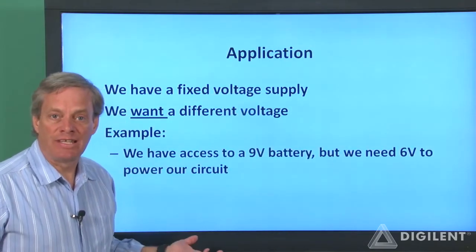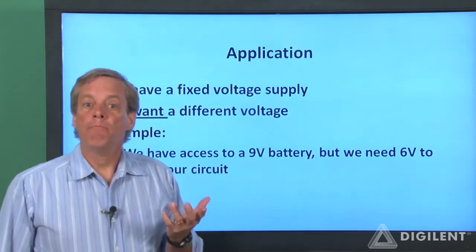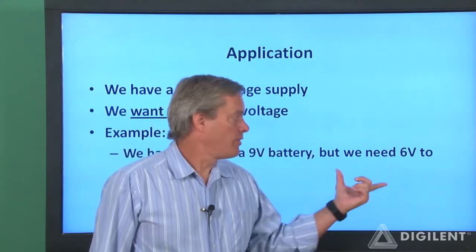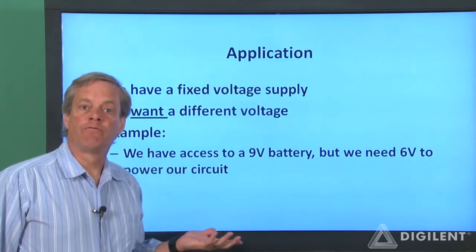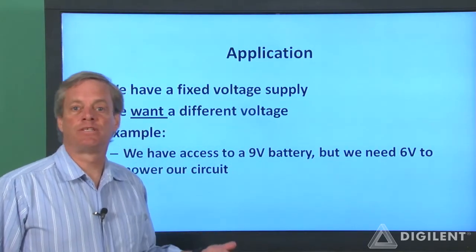As a specific example, suppose we have a 9-volt battery, but the circuit that we're designing requires 6 volts to work. We have to somehow convert our available 9 volts to the 6 volts we need.